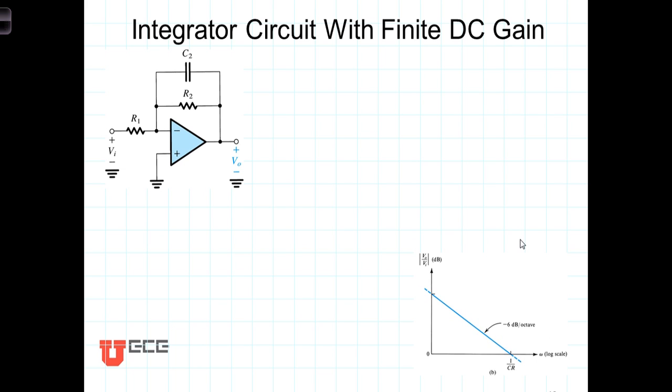As we observed in the integrator circuit with only a capacitor in the feedback path, the amplifier had infinite DC gain, causing the amplifier to saturate in the presence of a DC component of voltage in the circuit.